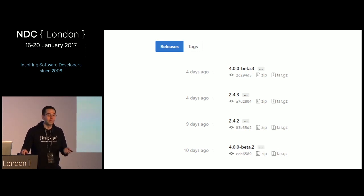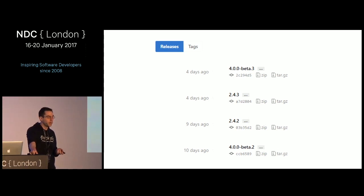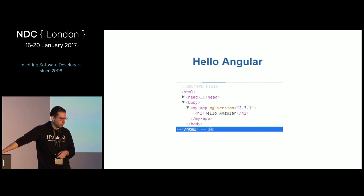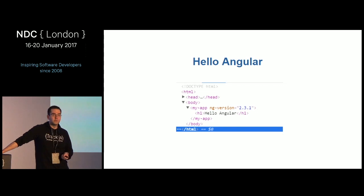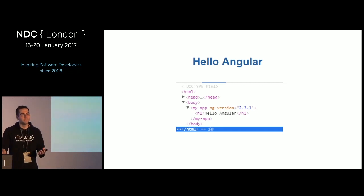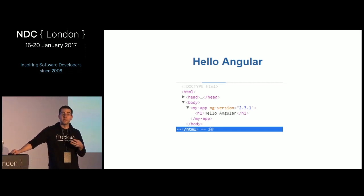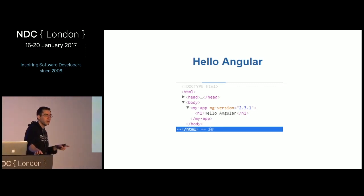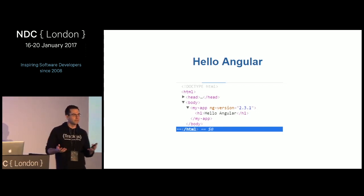I got into a big argument on Twitter with the Angular team about that. The upgrade treadmill is way too fast — people don't want to be upgrading every six months with breaking changes to their app. And there's also a naming confusion issue: they want to call it just 'Angular' now, but there's already Angular 1, so is it 'Angular,' 'Angular 1,' 'Angular Next,' or 'Angular 7'? And Angular 1 and Angular 2 are very different, so it's really confusing.